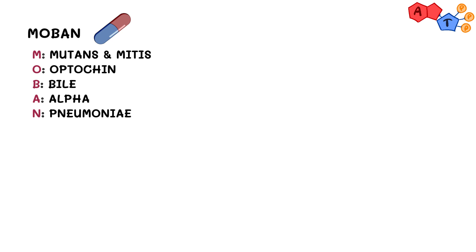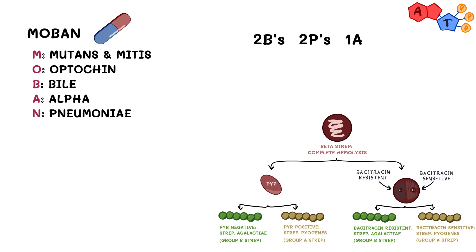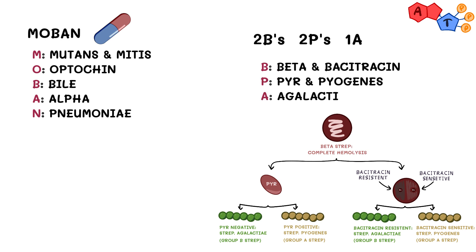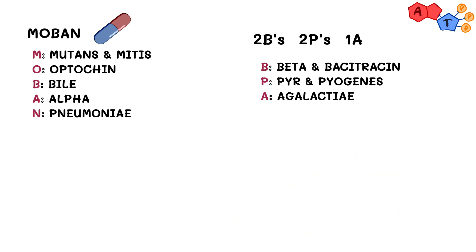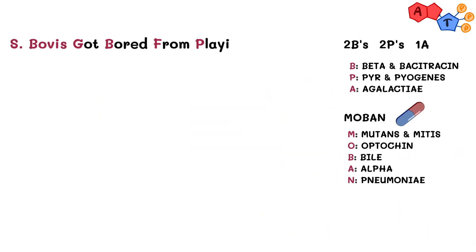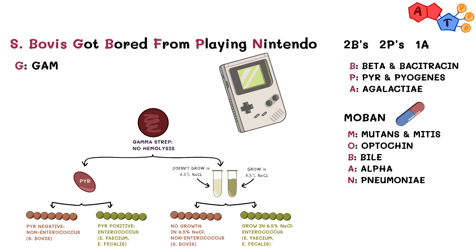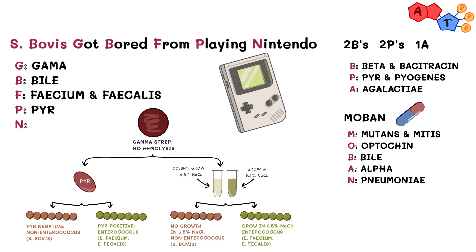For the second group, remember it's related to two Bs, two Ps, and one A: Beta and Bacitracin, PYR and Pyogenes, and Agalactiae. For the last group, remember Streptococcus bovis got bored from playing Nintendo, which stands for Gamma, Bile, Faecium, Faecalis, PYR, and NaCl. Knowing these details will make the process of differentiating between Streptococcus species a piece of cake.